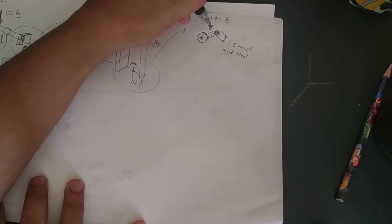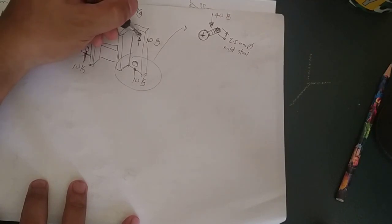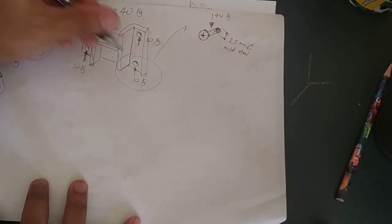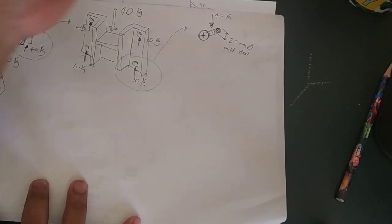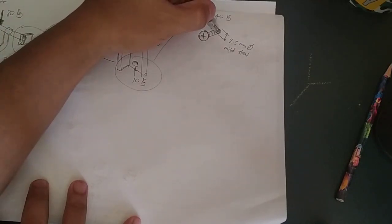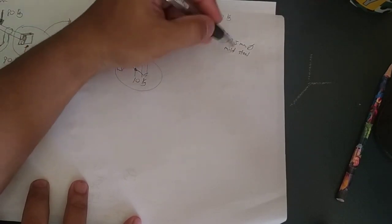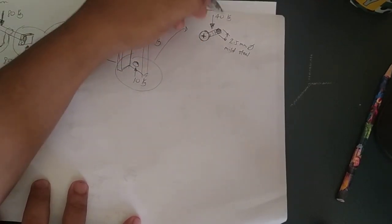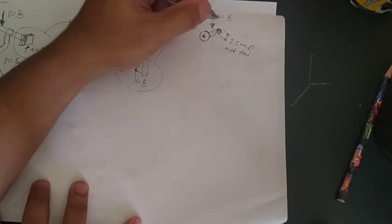In this particular stage, you must already know the specifications of the screw that you will going to use. So in my particular case, because I'm limited to whatever's available in my shop, I'm using a 2.5 millimeter diameter mild steel screw. So given this data here, then we can now do some calculation.